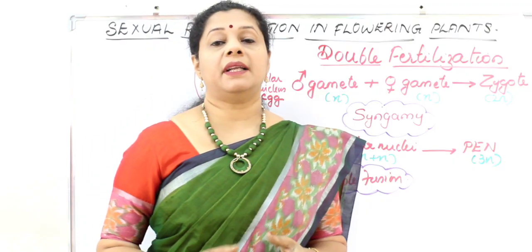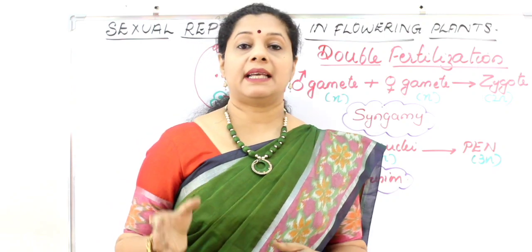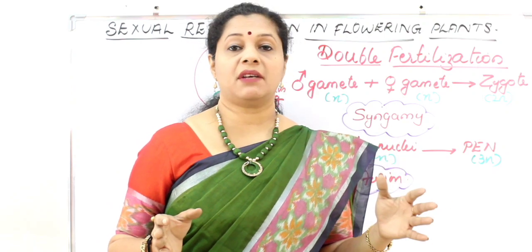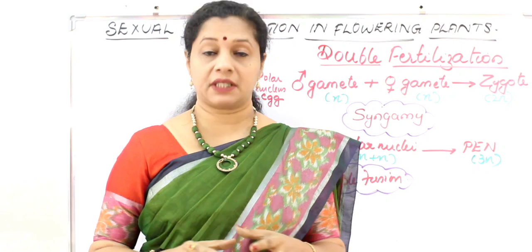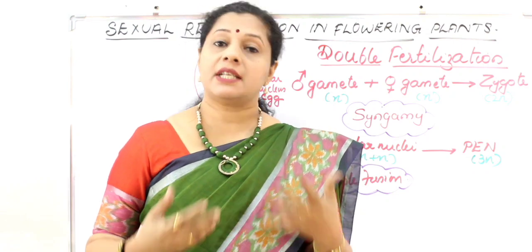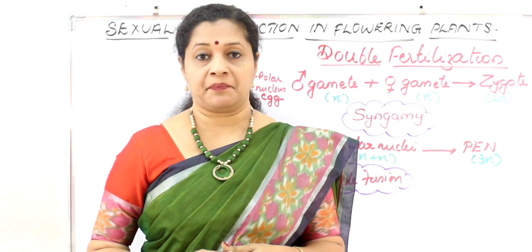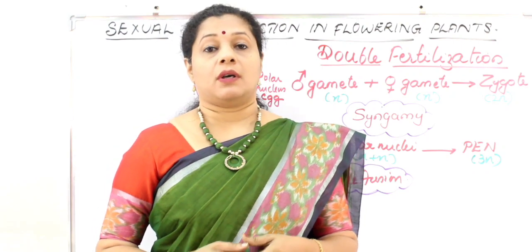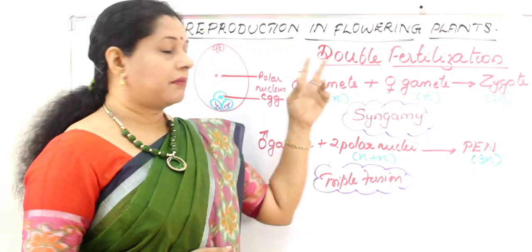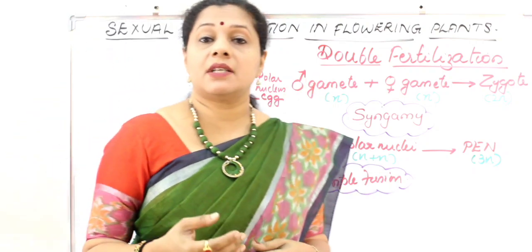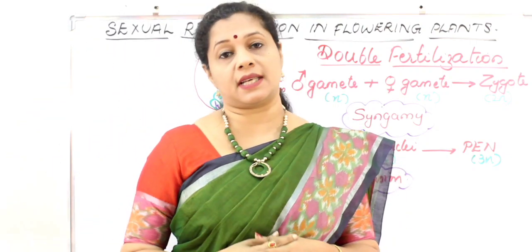We are all familiar with fertilization — the male gamete fuses with the female gamete to form a zygote; that process is called fertilization, also known as syngamy. Now, what is double fertilization? It is when fertilization happens twice, meaning two fusions are happening.